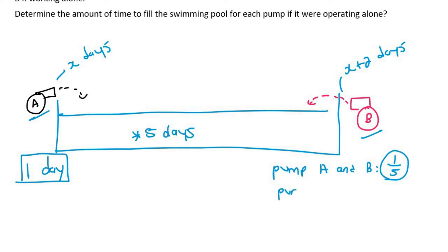What about pump A? If pump A can take X days to fill up an entire pool, what fraction could it fill up in one day? Well, it would be one over X. For example, if it takes ten days, then in one day it can fill up one-tenth. So if it takes X days, then it can fill up one over X. And what about pump B? Well, it would fill up one over X plus two.